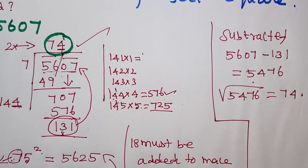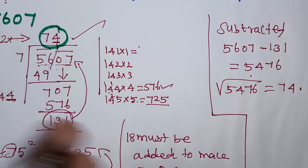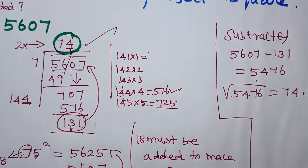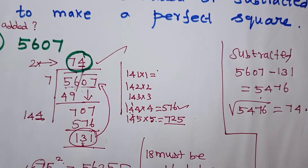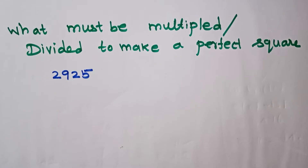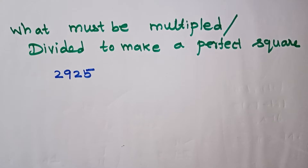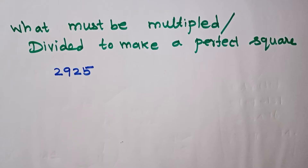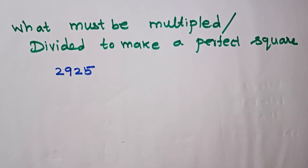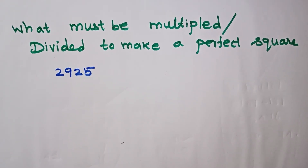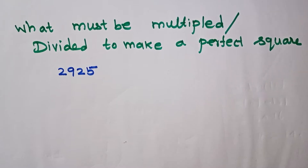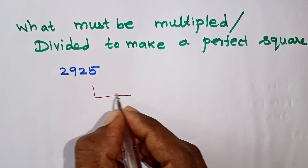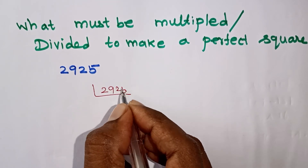What must be added or subtracted — long division method complete. Next concept: what must be multiplied or divided to make a perfect square? For this we use prime factorization. The number is 2925. So 2925 is broken into prime factors.